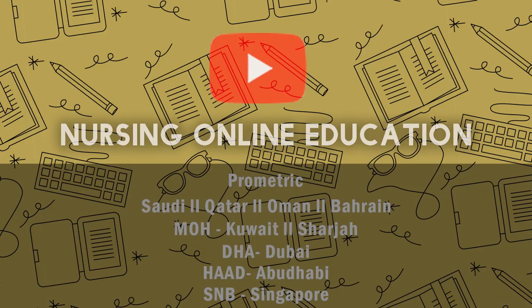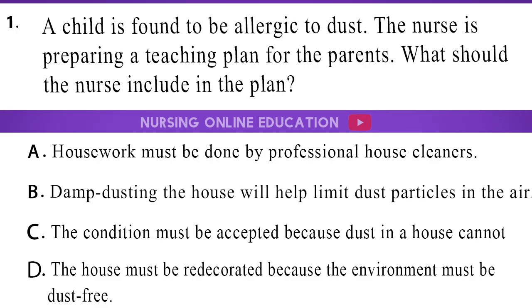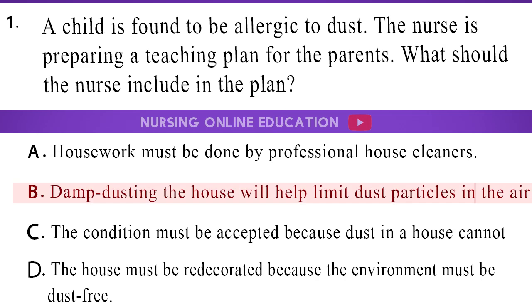Question 1. A child is found to be allergic to dust. The nurse is preparing a teaching plan for the parents. What should the nurse include in the plan? A. Housework must be done by professional house cleaners. B. Damp dusting the house will help limit dust particles in the air. C. The condition must be accepted because dust in a house cannot be eliminated. D. The house must be redecorated because the environment must be dust-free. The answer is option B: Damp dusting the house will help limit dust particles in the air.